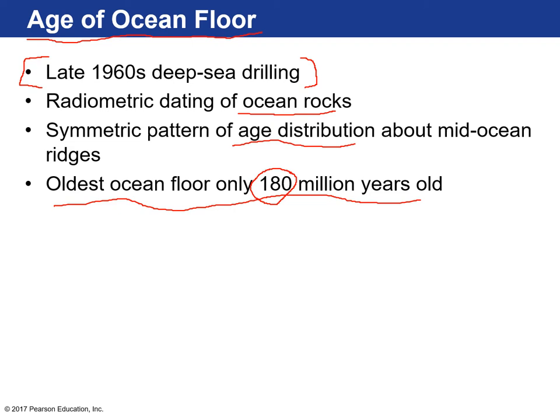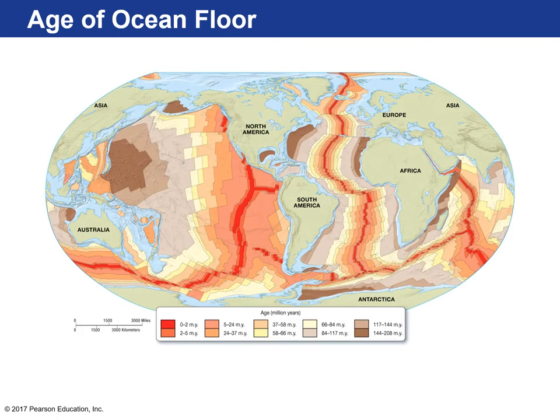They wondered what happened to all the ocean crust over the past 3.5 billion years. Here's a map showing the age of the ocean floor. The youngest rocks, between 0 and 2 million years old, are found right at the mid-ocean ridges — at the axis of the spreading centers. Here's the mid-Atlantic ridge going right through the middle of the Atlantic Ocean. That makes sense because that's where new volcanism is occurring and new volcanic rocks are being produced, so they've got to be the youngest.